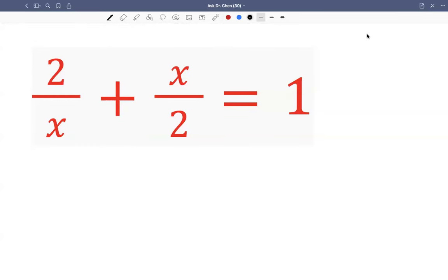Let's see this question. We want to solve this equation. We have a rational part, which means x appears in the denominator, and we have a polynomial part. It's a linear one.